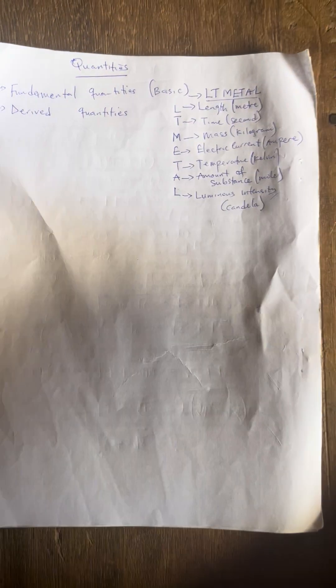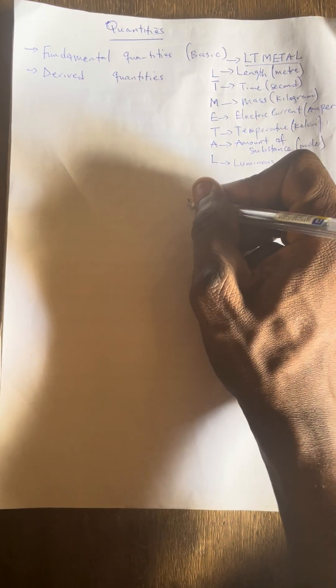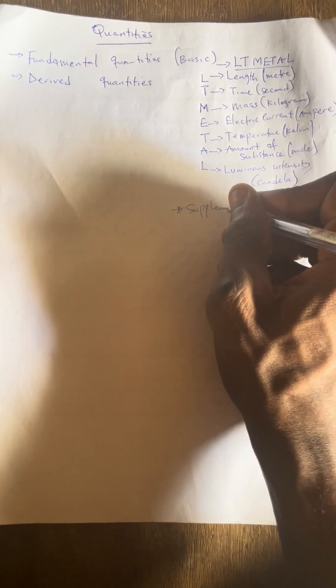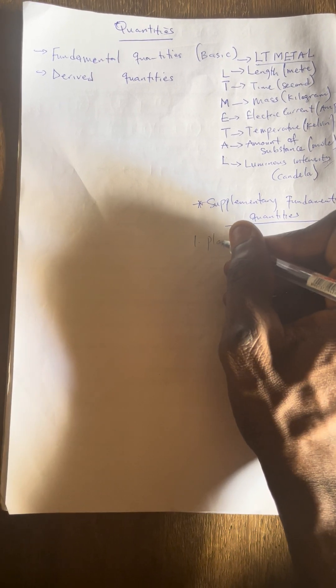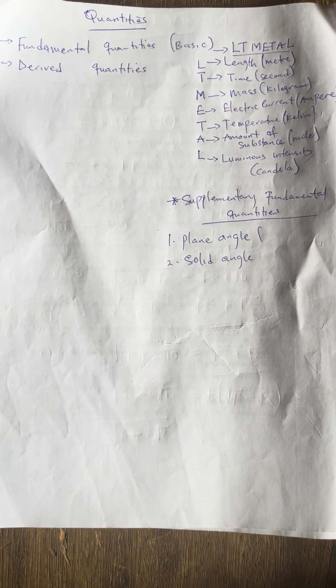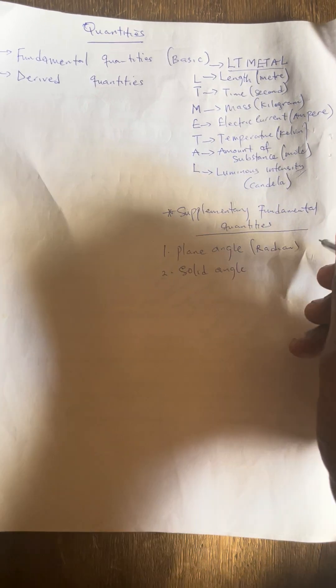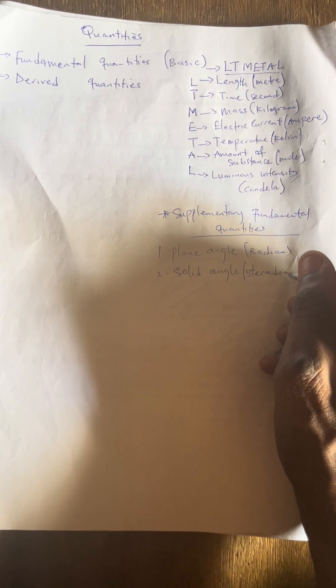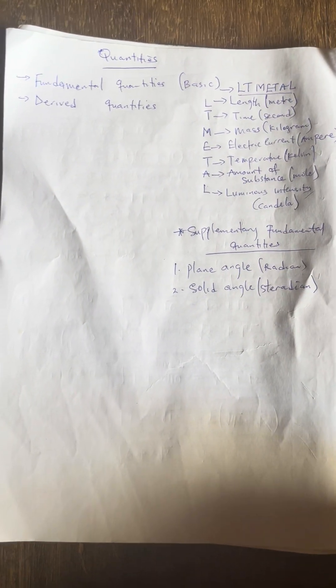These are the seven fundamental quantities. So if they ask what the seven fundamental quantities are, we have it as L-T-Meta. Now, we also have two supplementary fundamental quantities: the first one is plane angle and the second one is solid angle. The plane angle is measured in radian, and the solid angle is measured in steradian.